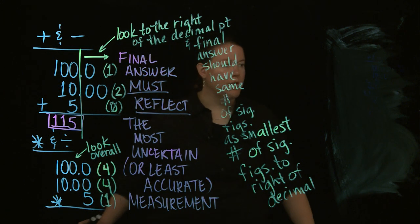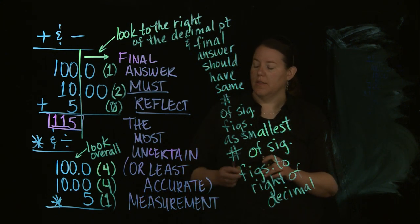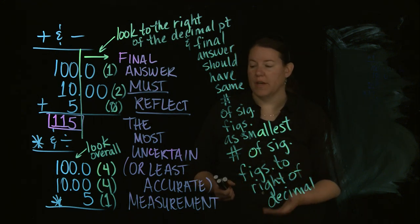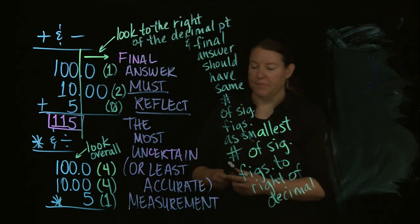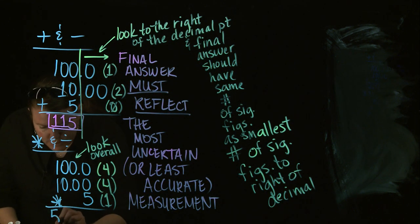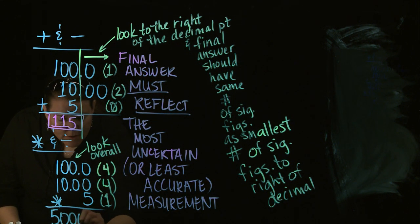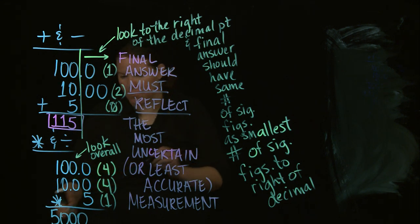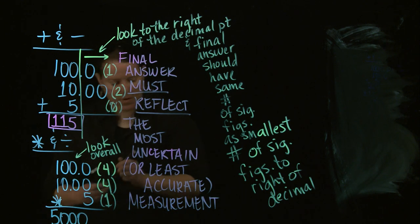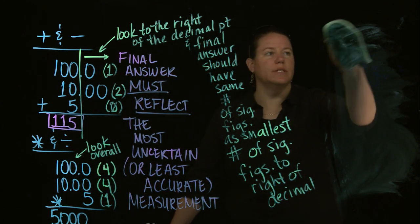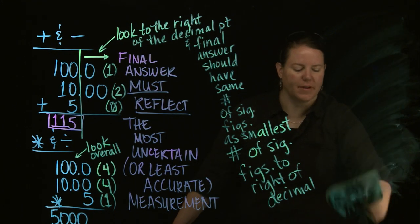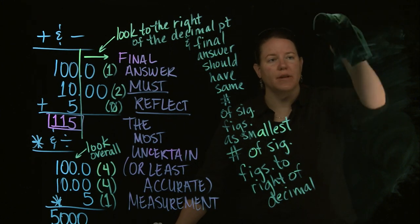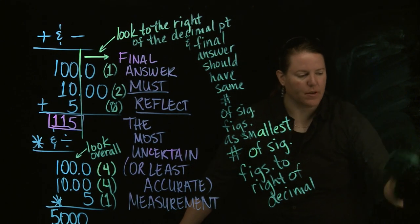Your final answer needs to reflect the smallest number of total significant figures, which is one. The actual product is 5,000. To express that with one significant figure, you have to put it in scientific notation — you really don't have a choice in this case.